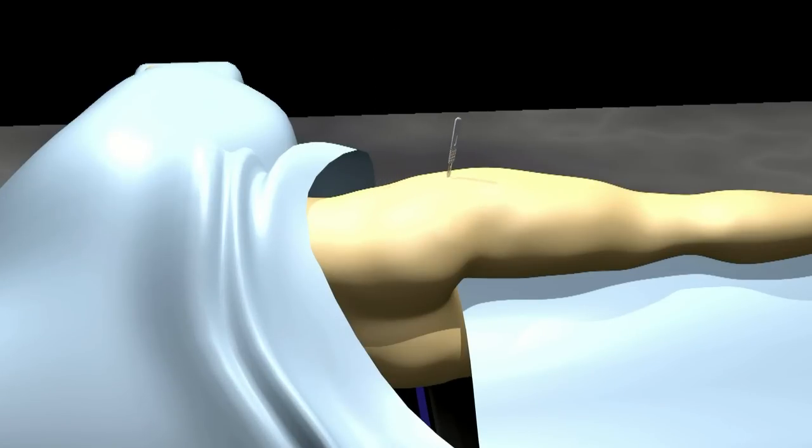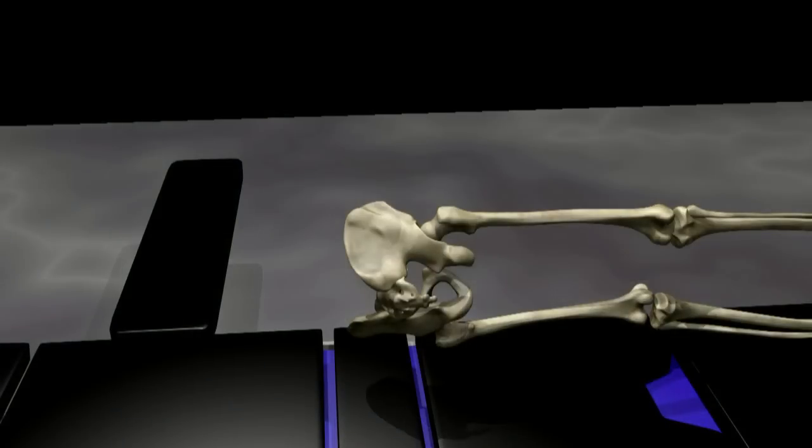An incision is made over the hip joint. The skin is pulled out of the way and the muscles surrounding the hip joint are carefully dissected in order to expose the joint.